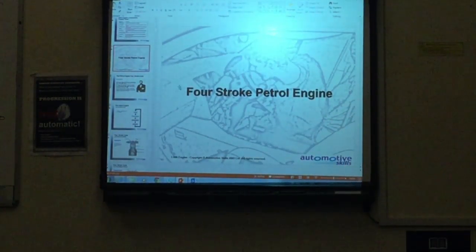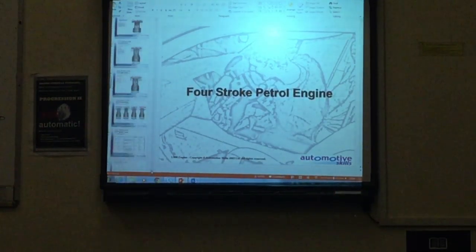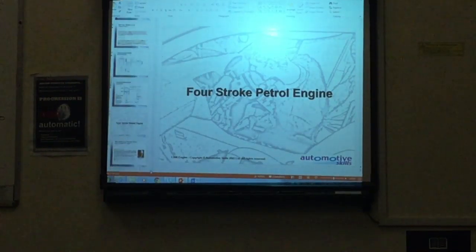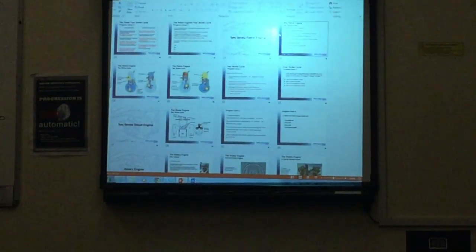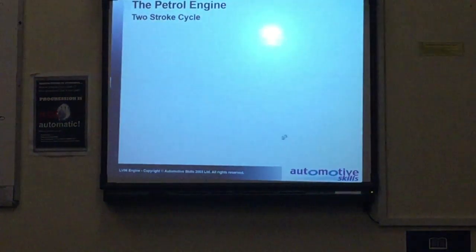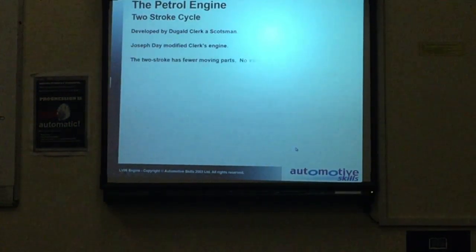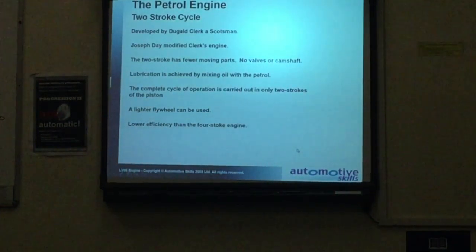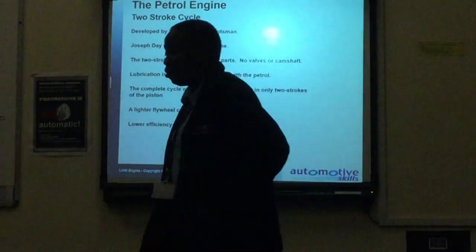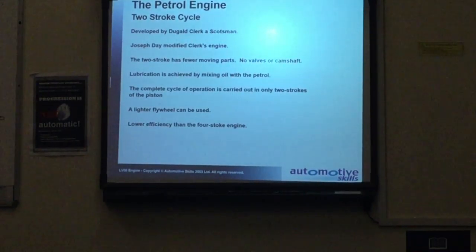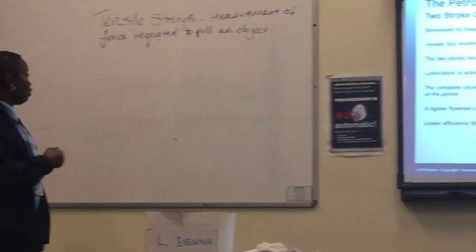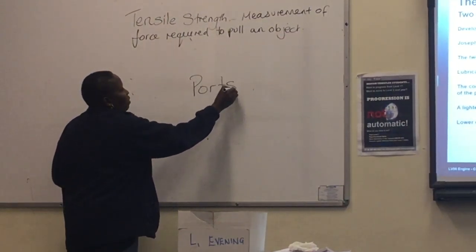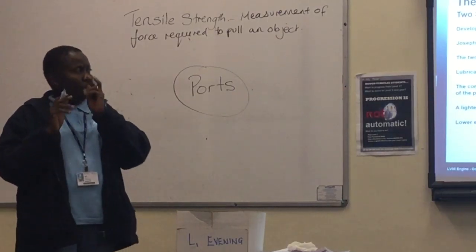So we have four-stroke petrol and four-stroke diesel. We also have the two-stroke cycle engine. The two-stroke cycle engine was designed by somebody called Dugald Clerk — it is also known as the Clerk cycle. The difference between the two-stroke and the four-stroke cycle is that on the four-stroke we have intake and exhaust valves, but on the two-stroke cycle we do not have valves — what we have is ports. On the two-stroke cycle we have three ports.